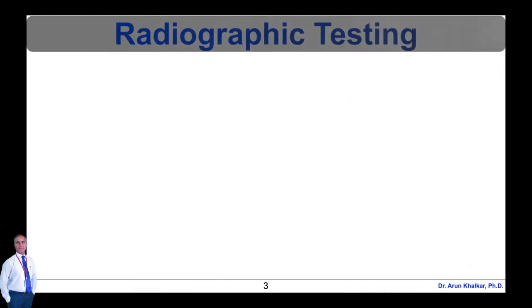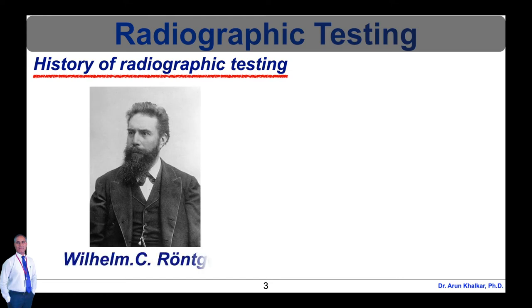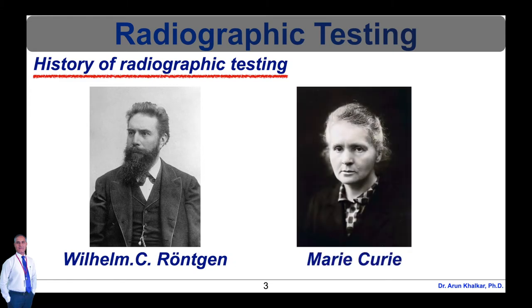First, let's see the history of radiographic testing. The history of radiographic testing involves two beginnings: the first comes with the discovery of X-rays by Wilhelm Conrad Roentgen in 1895, and the second with the announcement by Marie Curie in December 1898 that demonstrated the existence of new radioactive material called radium.